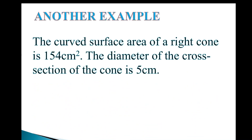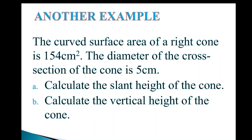Moving on to another example: the curved surface area of a right cone is 154 centimeters squared, and the diameter of the cross-section is 5 centimeters. Calculate: A) the slant height of the cone, and B) the vertical height of the cone. This is different from the first example — here we are given the curved surface area and the diameter, and we need to find the slant height and vertical height.